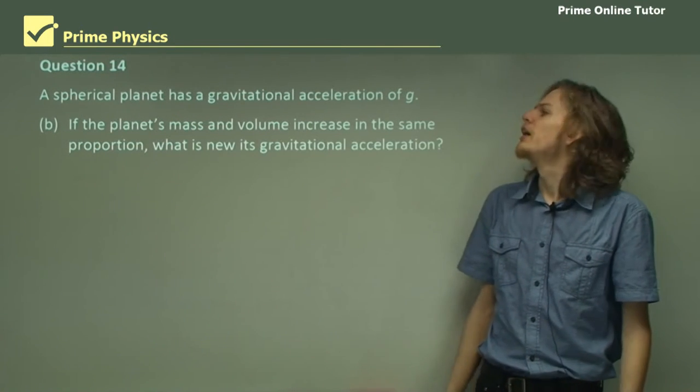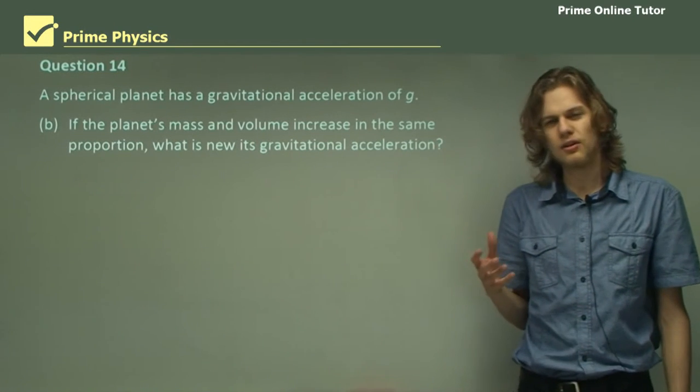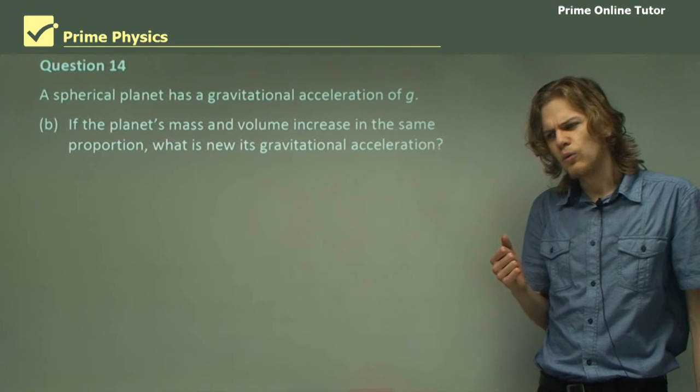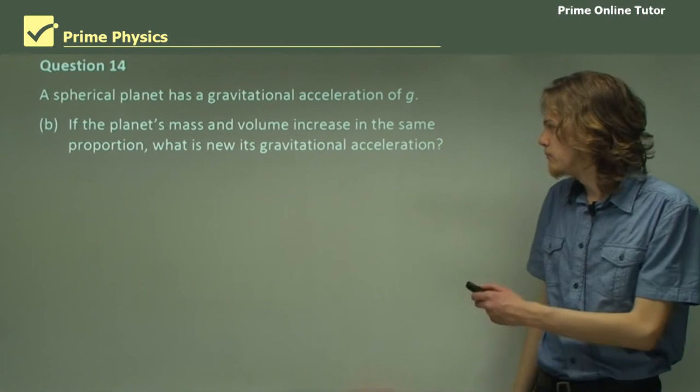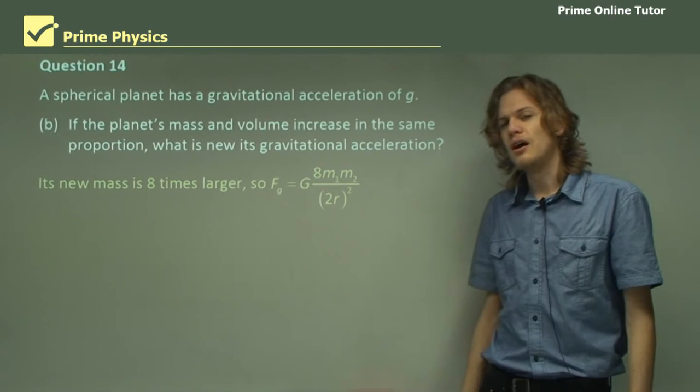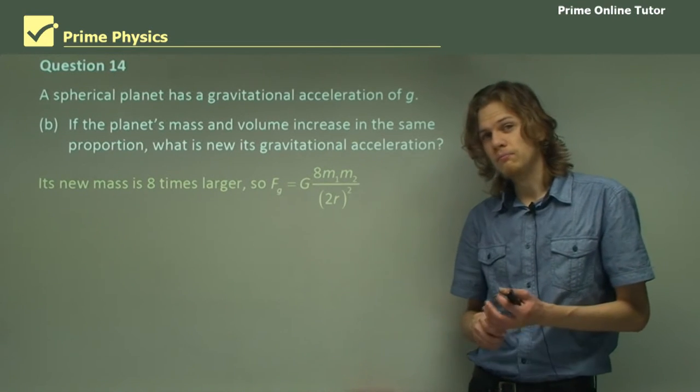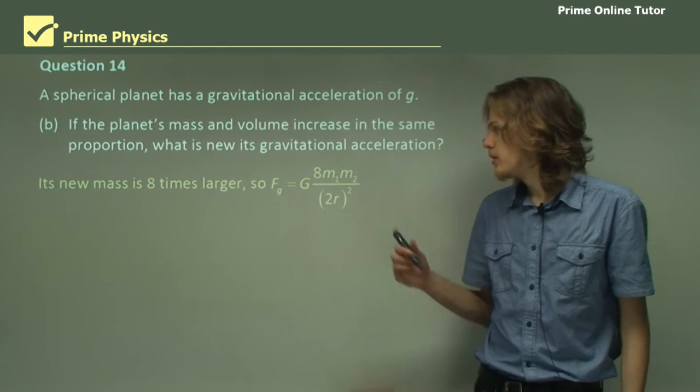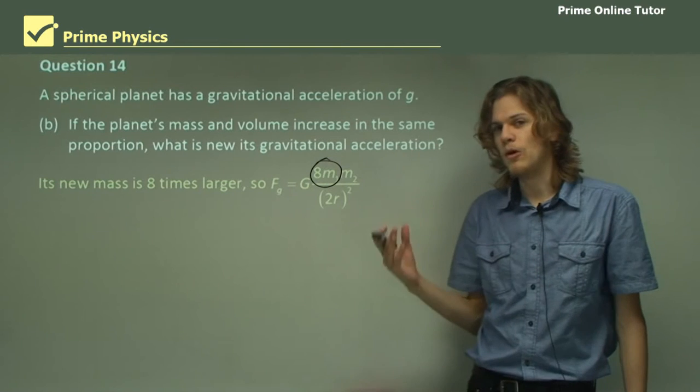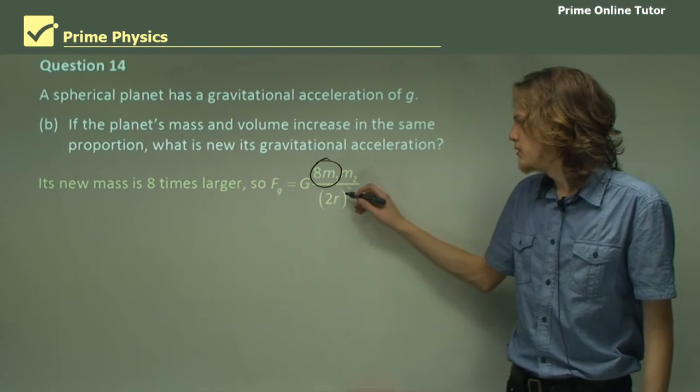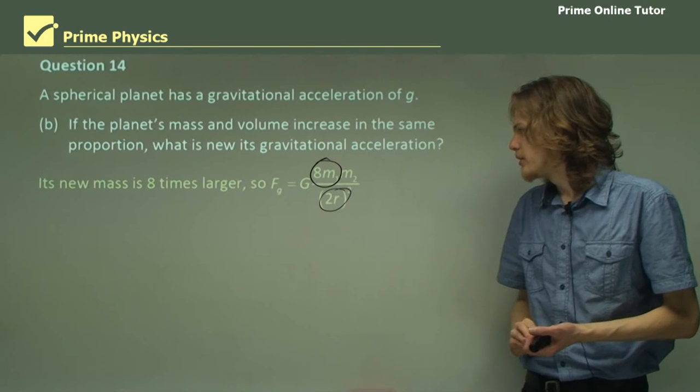Part b. If the planet's mass and volume increase in the same proportion, what is its new gravitational acceleration? Well, if our planet has 8 times as much volume, then it must have 8 times as much mass. So our new equation for gravitational force will be 8m1 instead of just m1. And it will be 2r instead of just r.